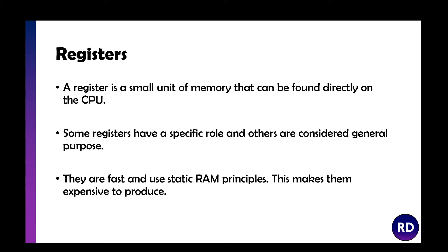A register is a small bit of memory, similar to RAM, that can be found directly on the CPU. Some registers have a specific role and others are just there to store data. They are very, very fast and use static RAM principles, which makes them very expensive. They're a lot faster than RAM, and because they're physically inside the CPU, that makes them even faster.